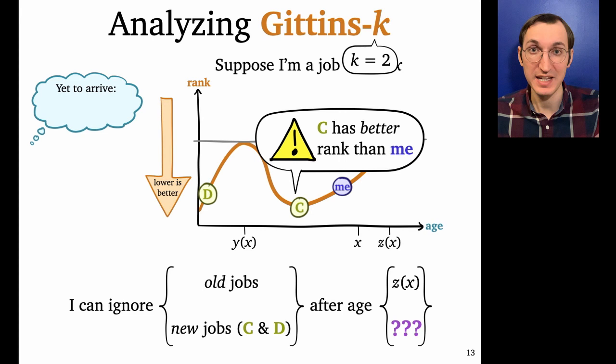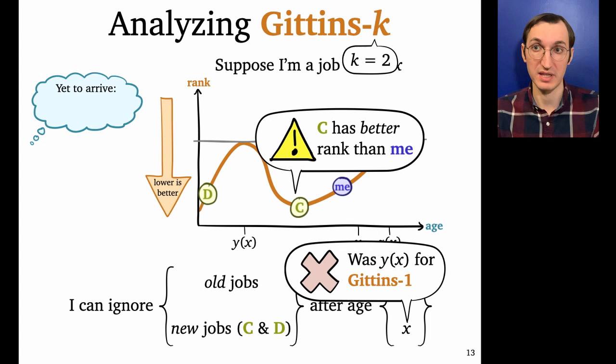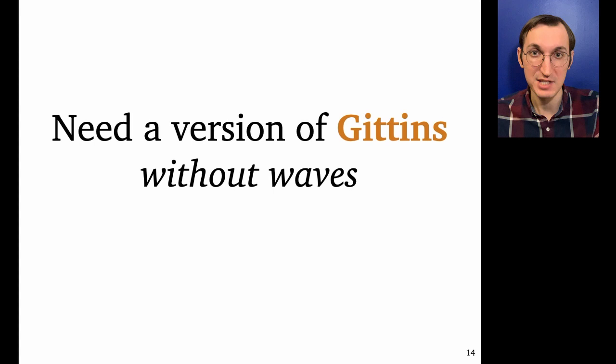Job C is after age Y of X, but it just got prioritized over me. I can't ignore job C yet. It turns out that in the worst case, I can't ignore new jobs until they reach age X, which is much worse than the Y of X we had for Gittins-1. So it turns out that this valley in the Gittins rank function, this wave causes a lot of problems for us.